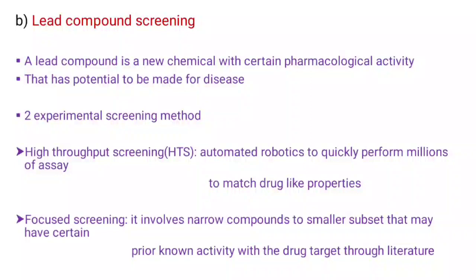Then lead compound screening. A lead compound is a new chemical with certain pharmacological activity, sometimes called a drug, that has potential to treat a disease. There are two experimental screening methods. First, high-throughput screening: automated robotics quickly perform millions of assays to match drug-like properties; we develop thousands of drugs by this method to find which is most suitable. Second, focused screening: it involves narrowing compounds to a smaller subset that may have certain activity with the drug target, based on literature. By all these methods, we find out which drug is most suitable.